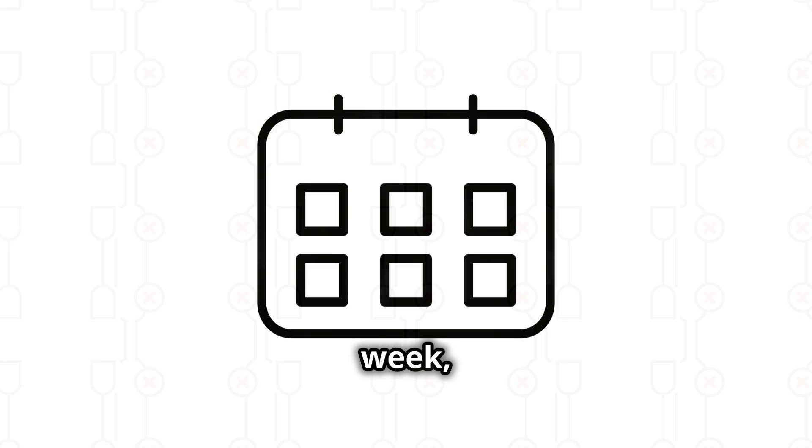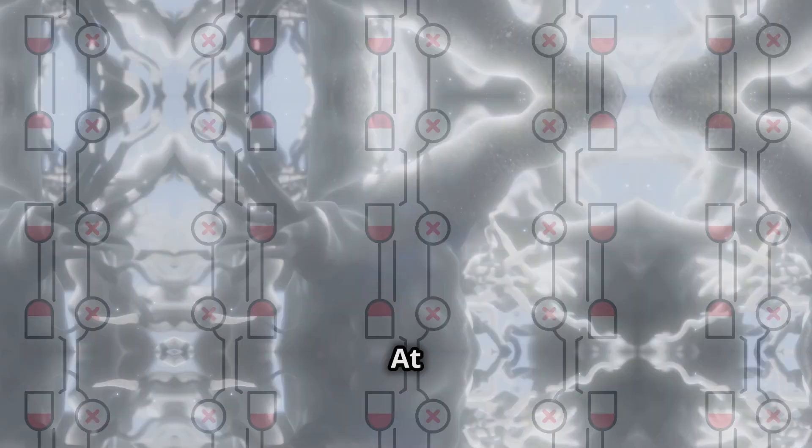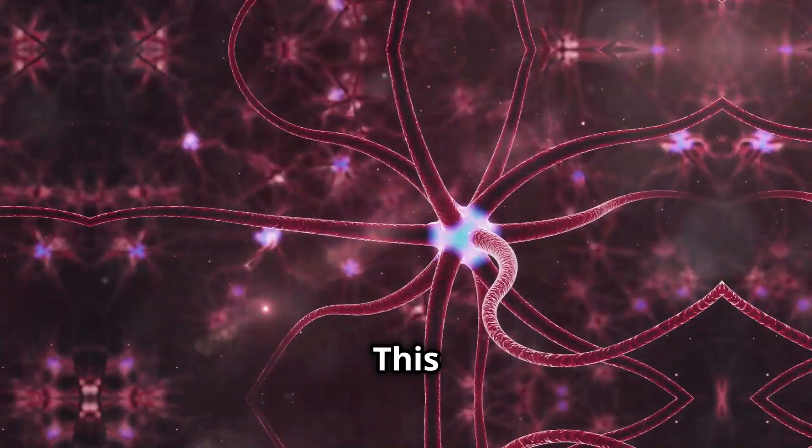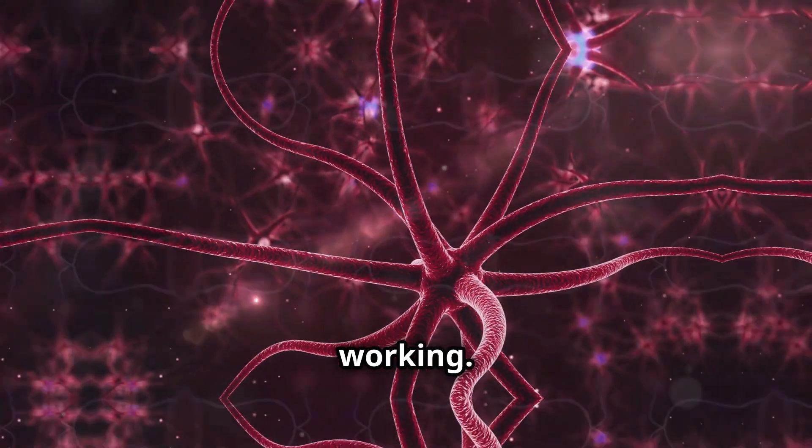In the first week, the goal is to disrupt old patterns. At a neurological level, this requires a conscious effort to stop firing the same neural circuits. This is when neuroplasticity starts working.